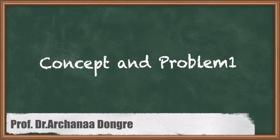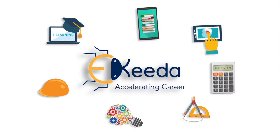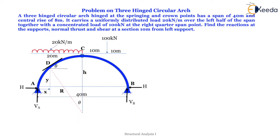Hello students! Today we are going to solve a problem on a three-hinged circular arch where supports are at the same level. A three-hinged circular arch is hinged at the springing and crown points, has a span of 40 meters and a central rise of 8 meters.